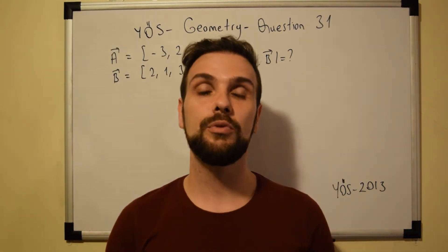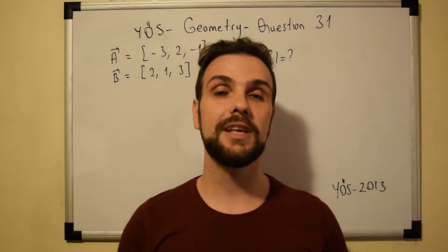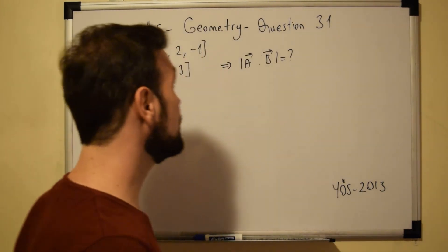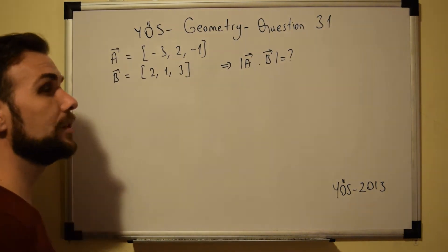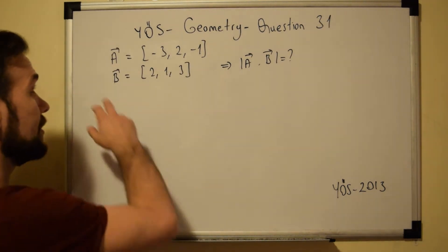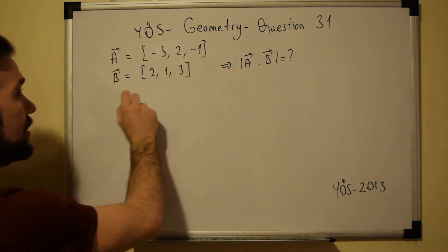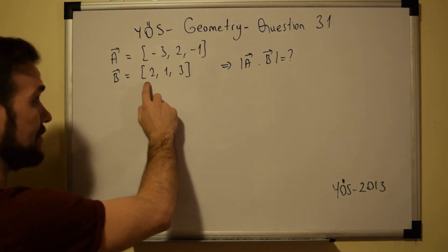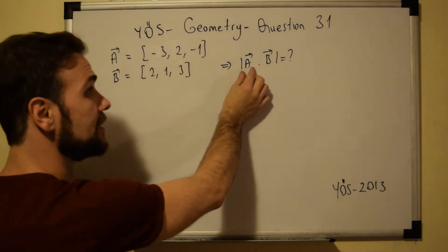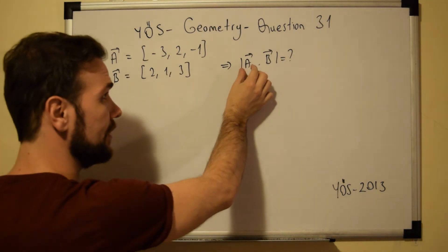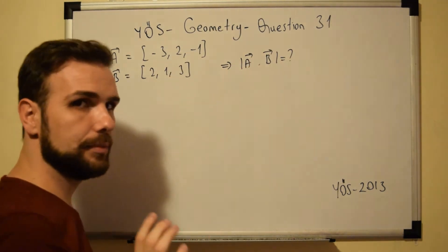Greetings everyone and welcome to question number 31 of the QS examination geometry section. In this question, as you can see, we are dealing with vectors. We have vector A which has values minus 3, 2, and minus 1. We have vector B which has values 1 and 3, and we are asked the value of vector A times vector B.